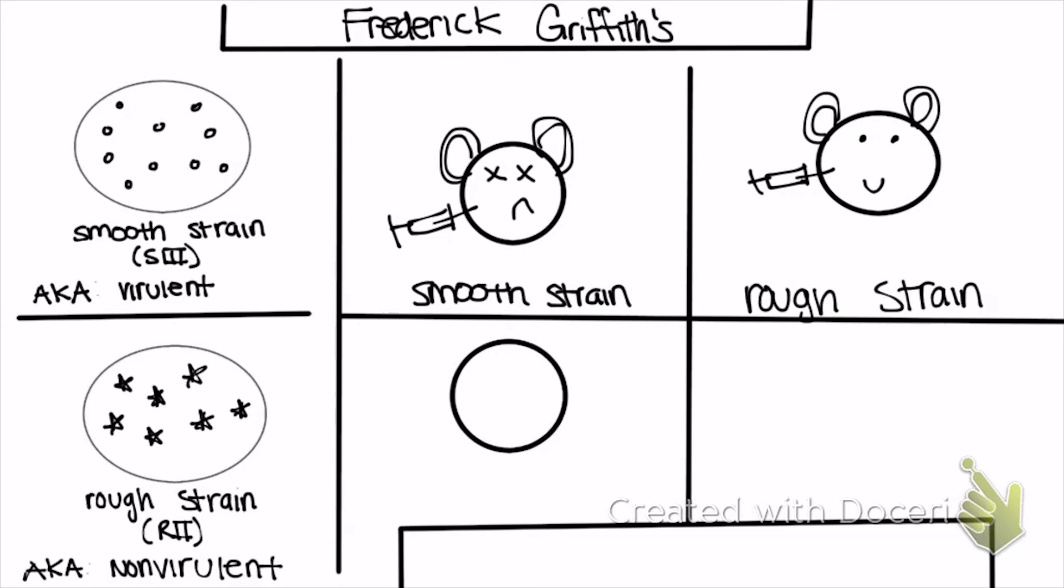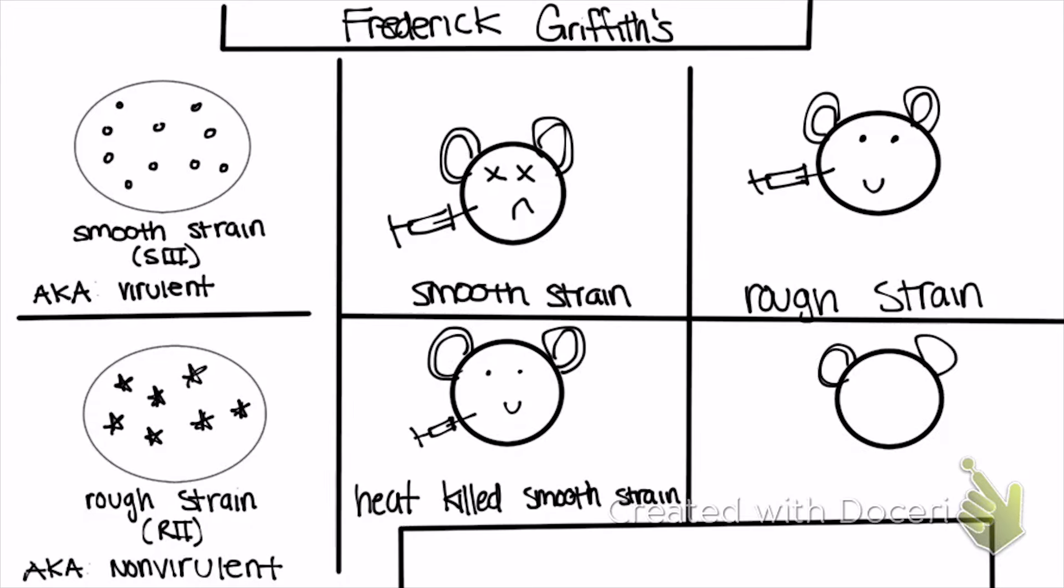So he said, what can we do so that we can turn the virulent or smooth strain into a strain that does not kill the mouse? You have to kill the bacteria, and you do that with heat. So he took heat-killed smooth strain, injected it into the mouse, and the mouse lived. So if heat-killed smooth strain caused the mouse to live and the rough strain caused the mouse to live, does that mean that when I mix heat-killed smooth strain with the rough strain, the mouse should live?